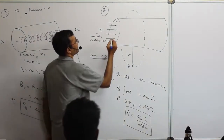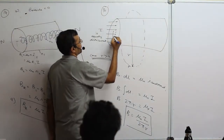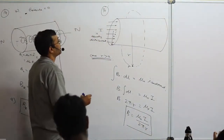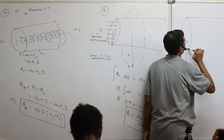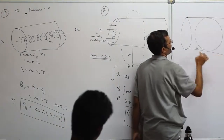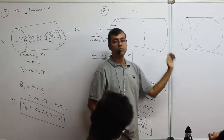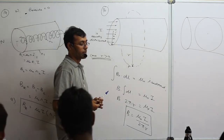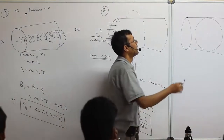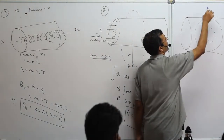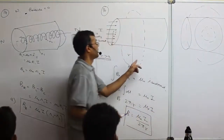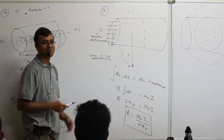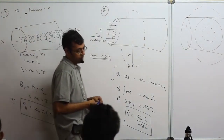The radius of the conductor is a. For r > a the enclosed current is the full I. The diagram shows the cross-section — do not be confused — they are asking for the magnetic field inside radius a and outside radius a.